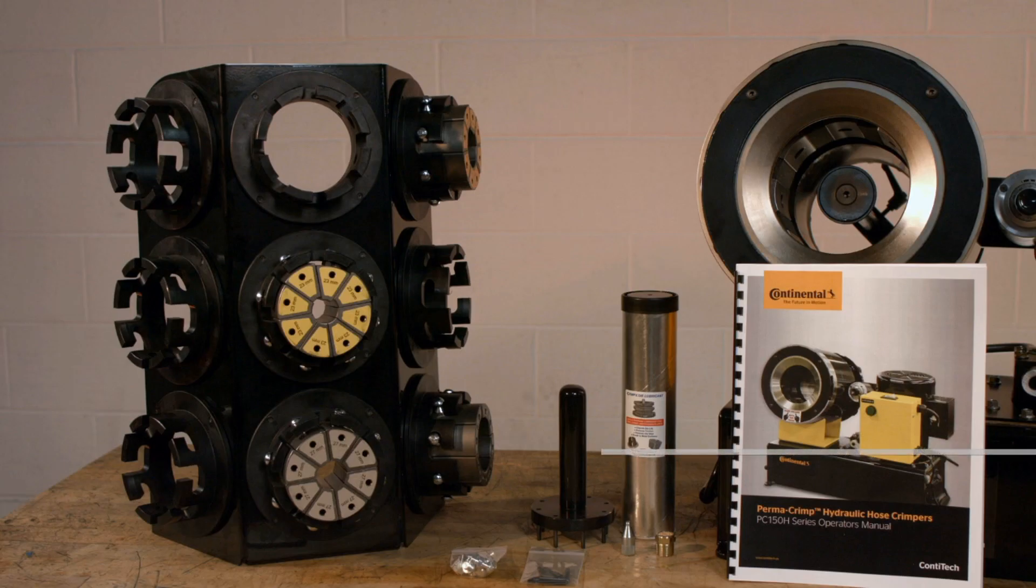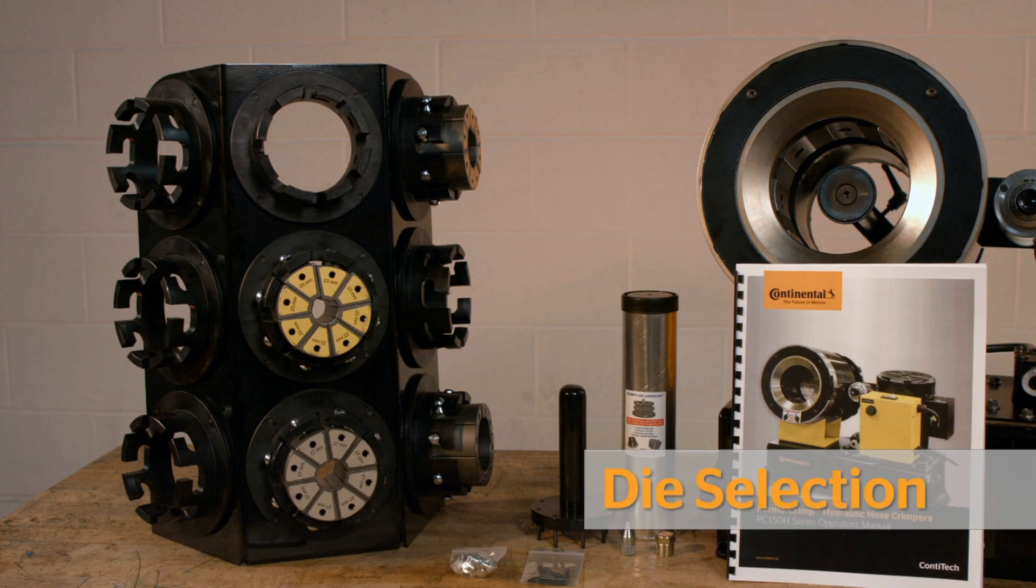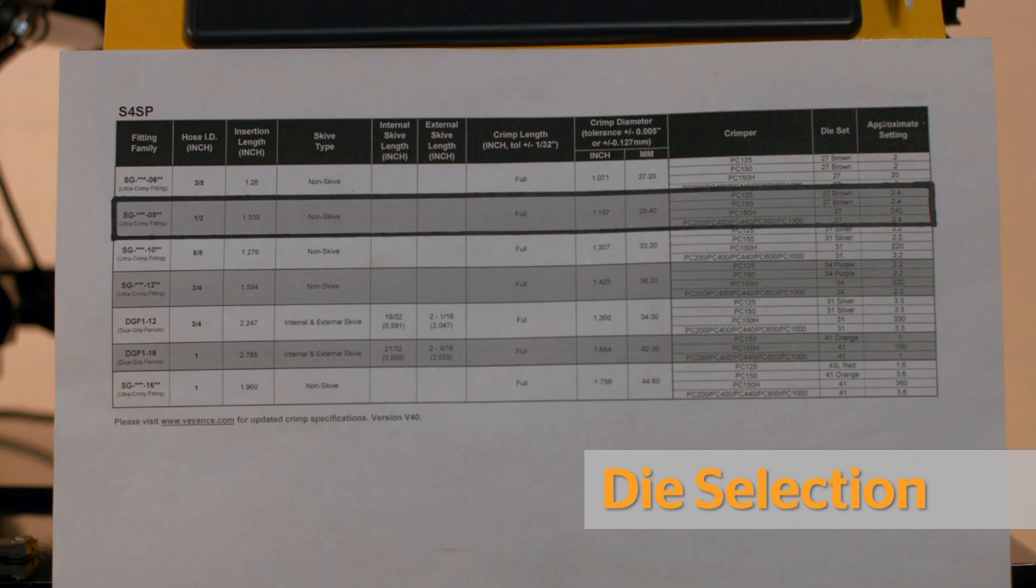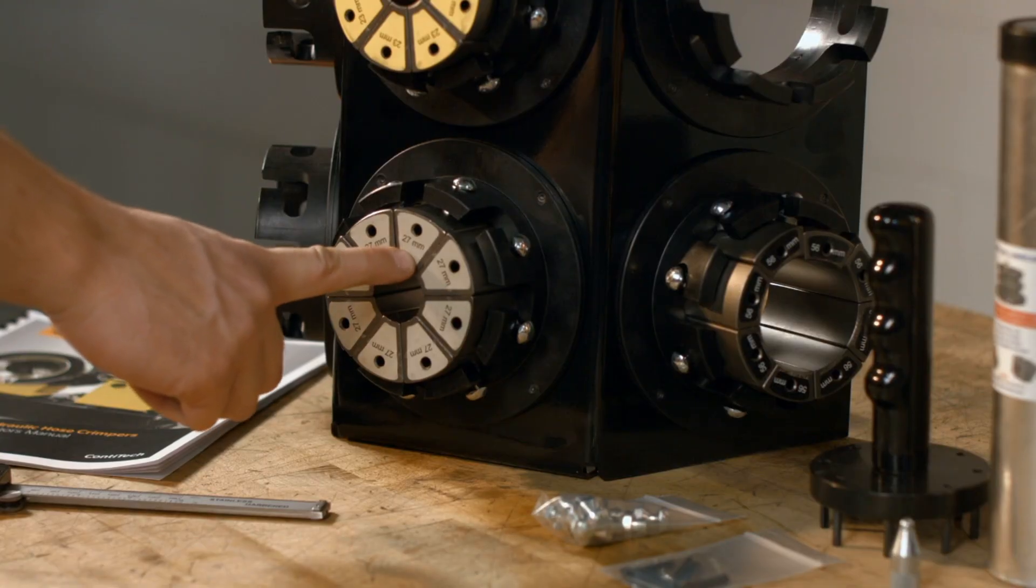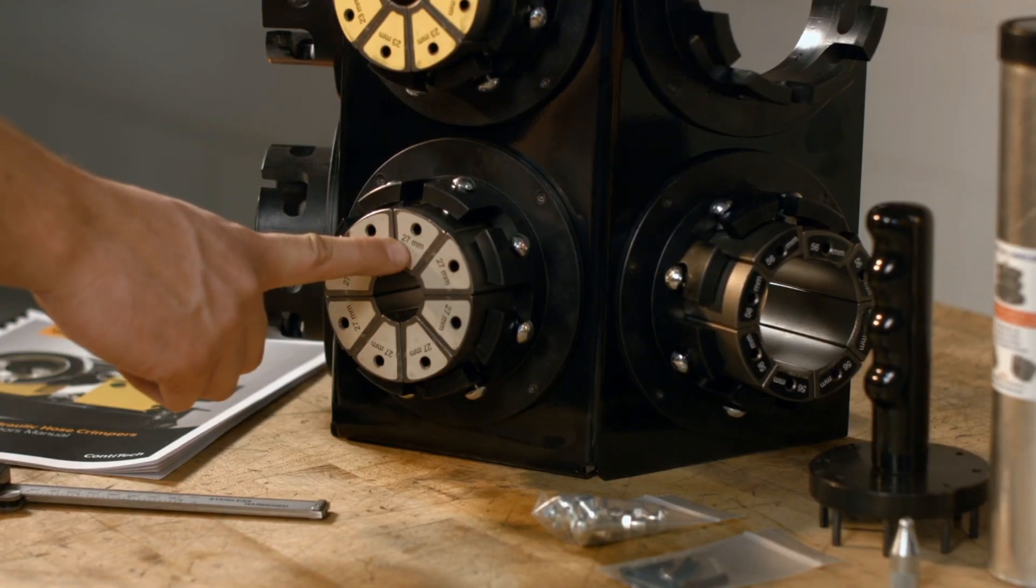Selecting the correct die for use is vital for proper crimper operation. To begin, use the hose and fitting crimp specs manual provided to select the correct hose and fitting for your project. In this example, we are using an S4SP-08 hose, which requires an SG fitting. We will be using die set 27 brown with a setting of 2.4.